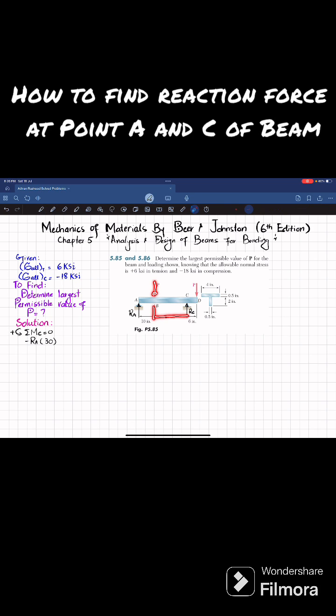The last moment is produced by this force and perpendicular distance is 6, and this is producing clockwise moment so it will be negative. We can write it as minus P multiplied by 6 is equal to 0.